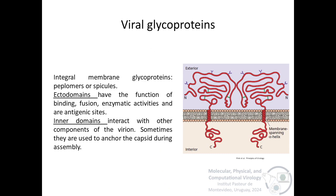The viral glycoproteins are integral membrane proteins called peplomers or spikes, and the ectodomains have the function of binding, fusion, enzymatic activities, and are antigenic sites. On the other hand, the inner domains interact with other components of the virion, and sometimes they are used to anchor the capsid during assembly.